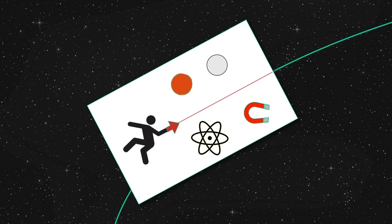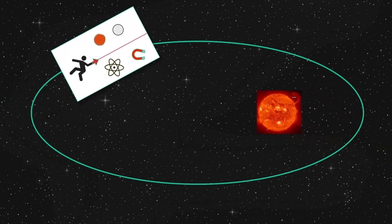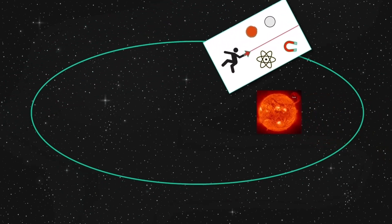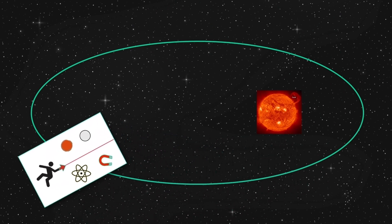But now, sometime later, the lab drifts closer to some star and gets caught in its orbit. The lab begins to fall freely around the star, changing speed as per Kepler's laws, speeding up when it gets closer and slowing down when it gets farther.